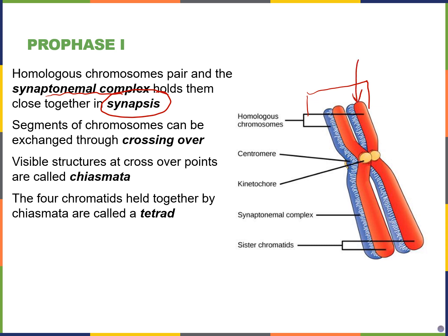To give an oversimplified example: the red chromosome is from mom, and the blue chromosome is from dad. The green gene location on mom's chromosome represents hair color — say, brown hair. And at that same location on dad's blue chromosome, that's the gene for hair color from dad — say, black hair. So homologous chromosomes carry the same types of genes but different versions; hair color from mom, hair color from dad, for example.